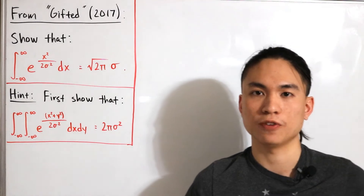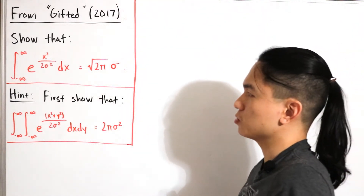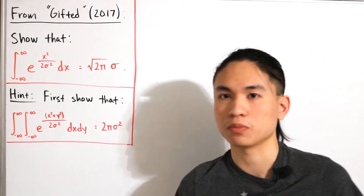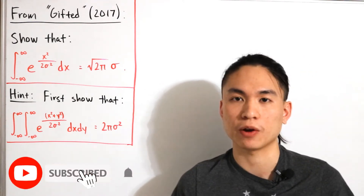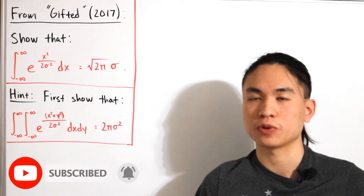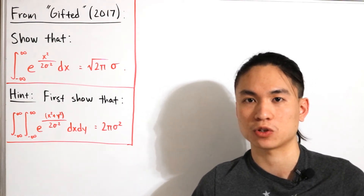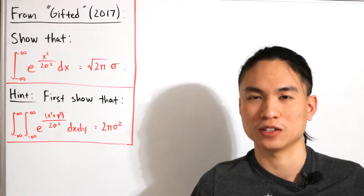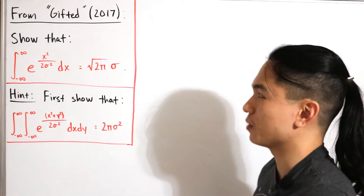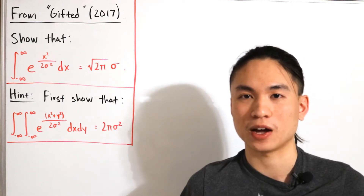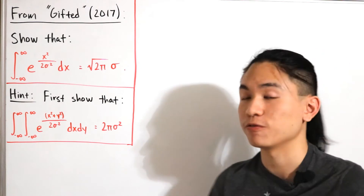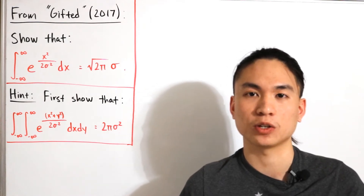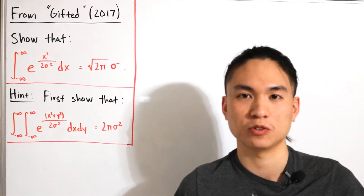Welcome back to another video. Today we have an improper integral that was present in the 2017 drama film 'Gifted,' whose plot revolves around an intellectually gifted seven-year-old, Mary Adler, who is the subject of a custody dispute between her maternal uncle Frank Adler and her maternal grandmother Evelyn Adler. Another great film focused on mathematics is the 1997 'Good Will Hunting,' also highly recommended.